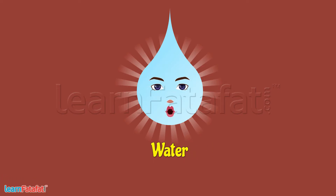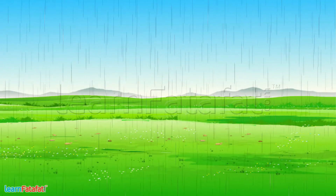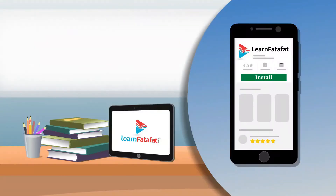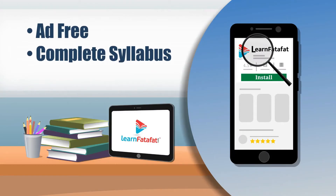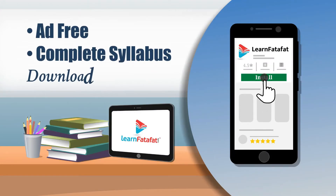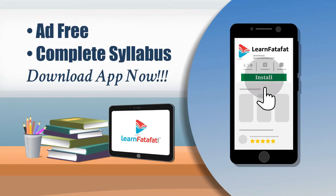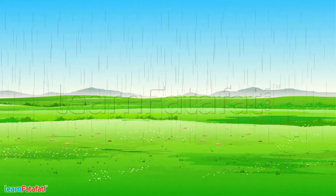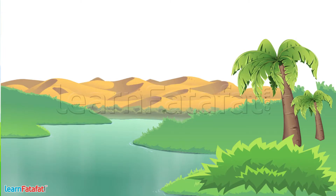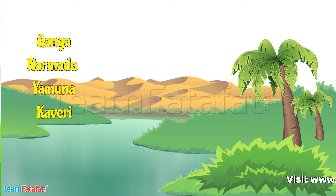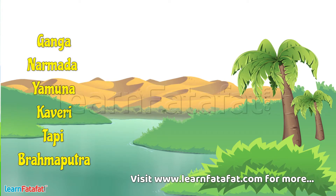I come on earth through rain. Then I can go to different rivers such as the Ganga, Narmada, Yamuna, Kaveri, Tapti, Brahmaputra, etc.